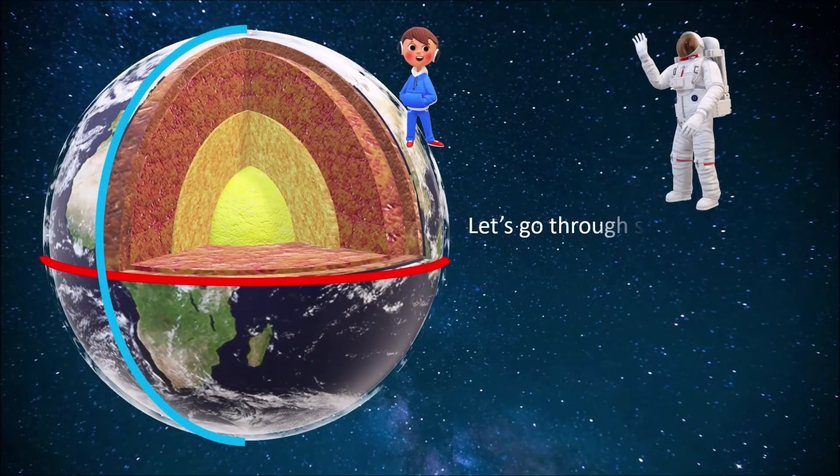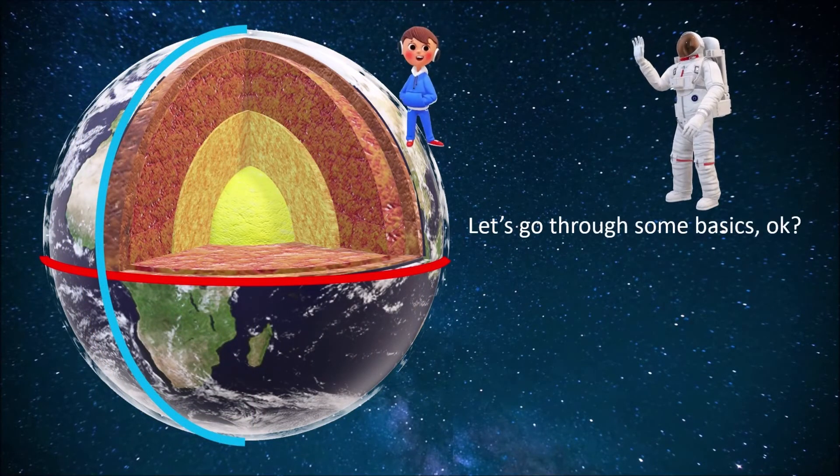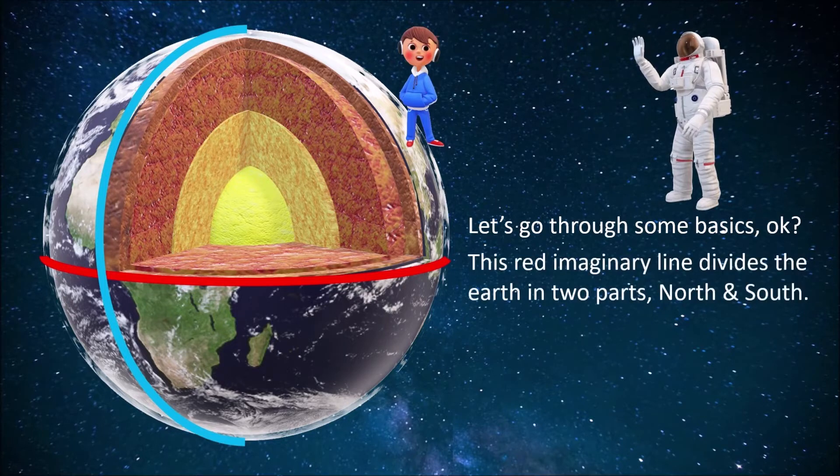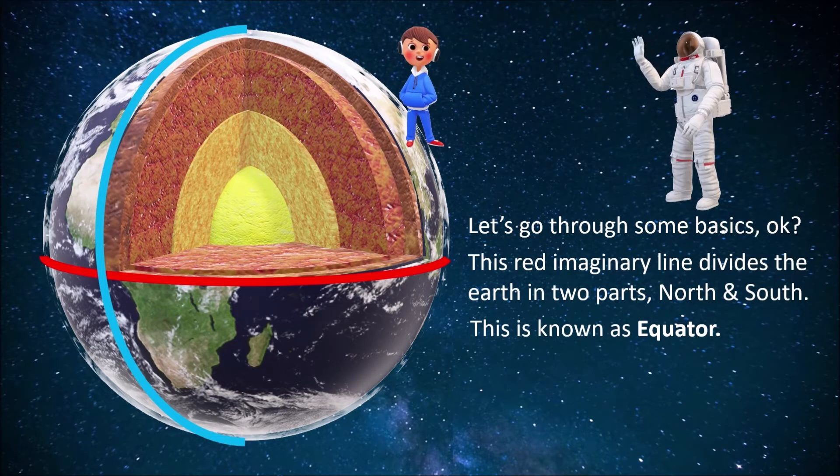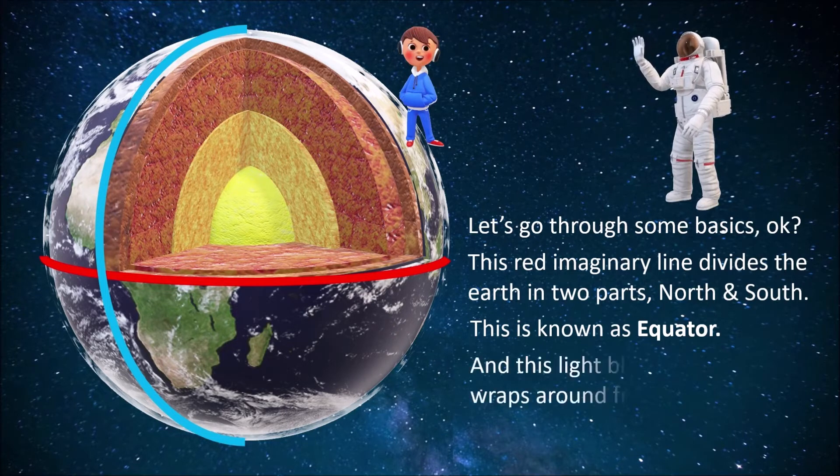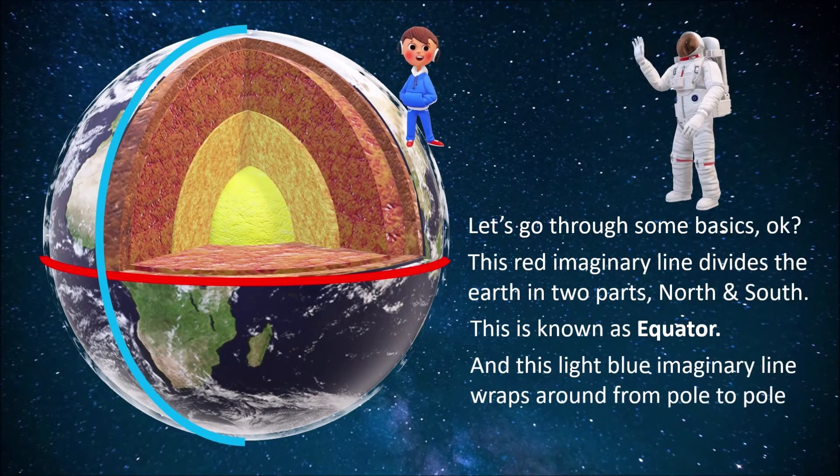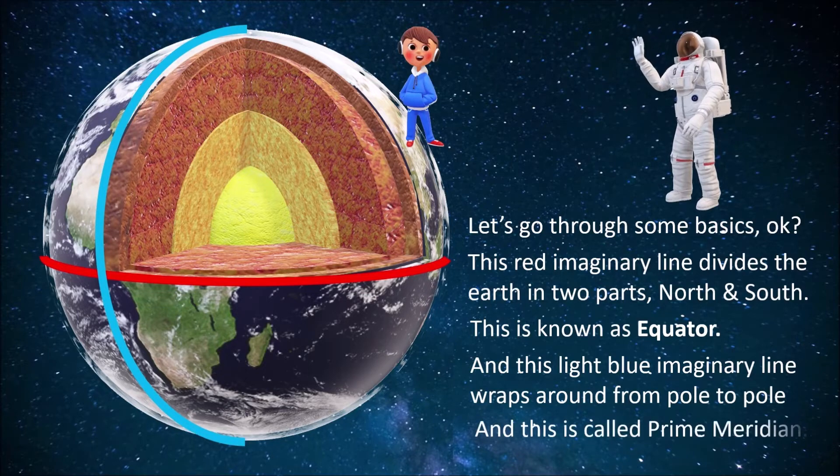Let's go through some basics. This red imaginary line divides the earth into two parts, north and south. This is known as equator, and this light blue imaginary line wraps around from pole to pole and this is called prime meridian.